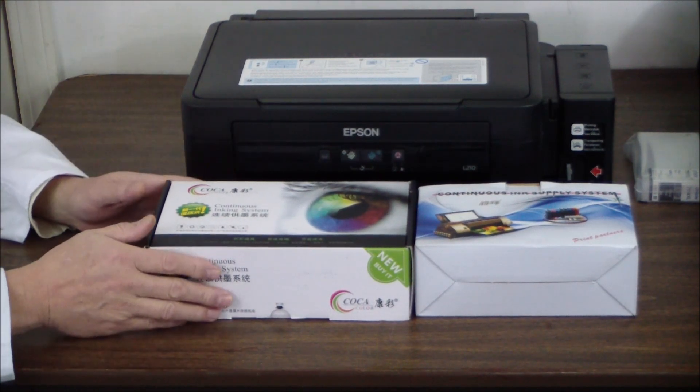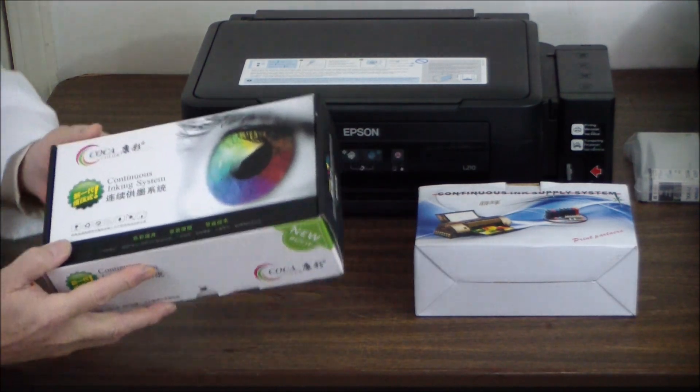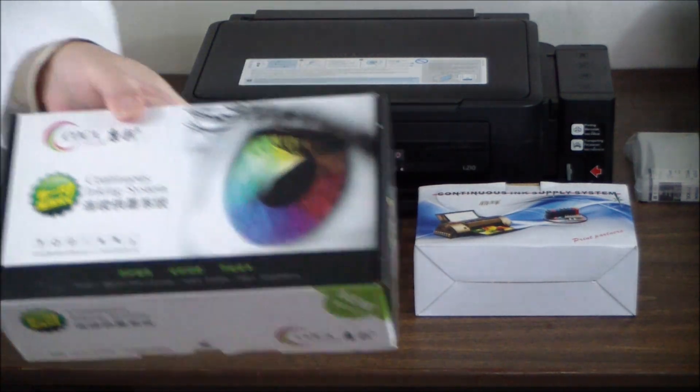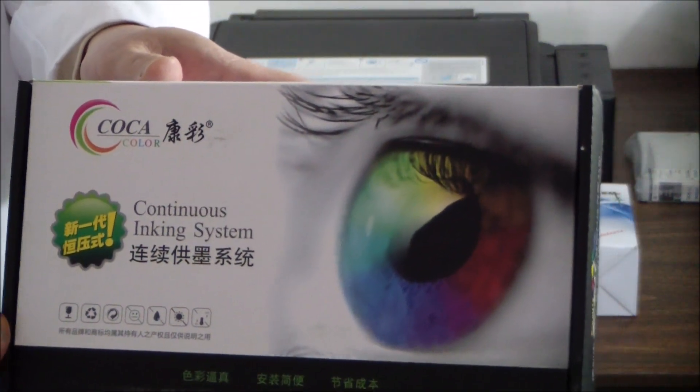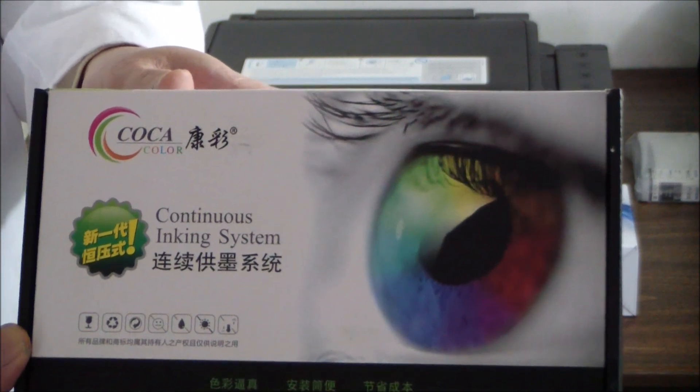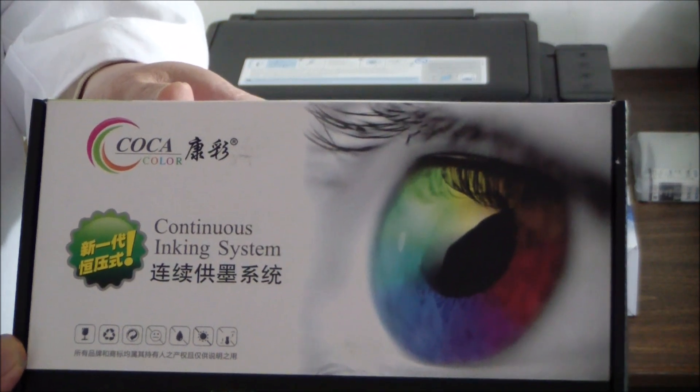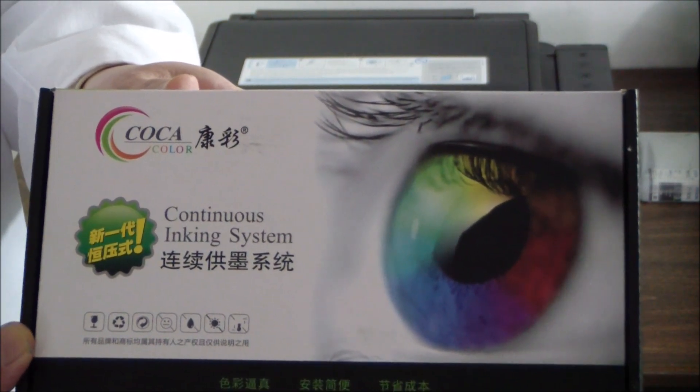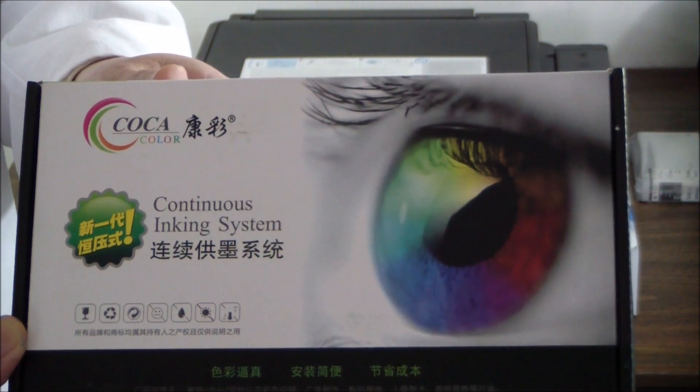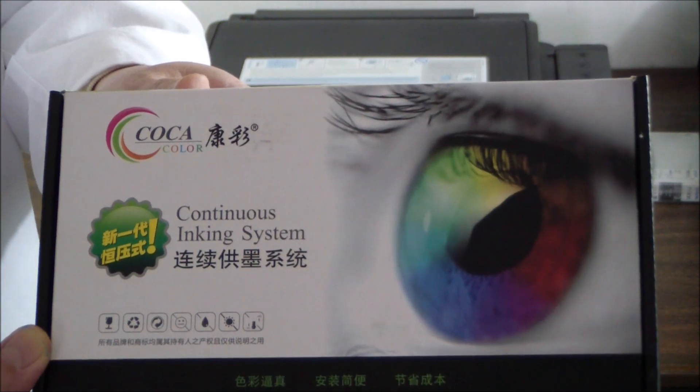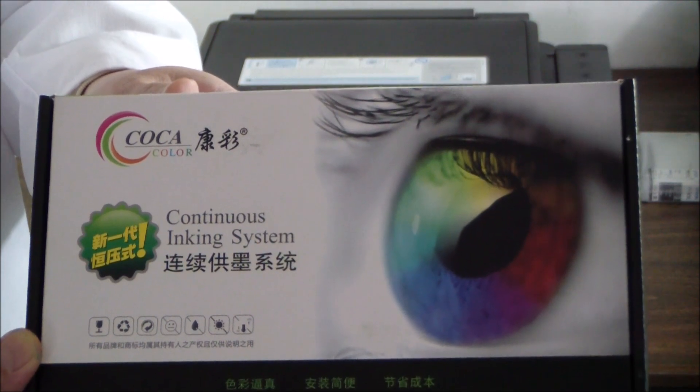Now, there's two kinds of kits. Both of the kits are made in China. This one is called a do-it-yourself kit, which means you provide the ink cartridges, empty ink cartridges, to use in the system. And this one is made by Coca-Color. Pretty funny.